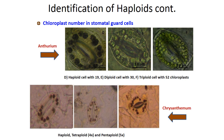The second technique is chloroplast number in stomatal guard cells. As you can see in this picture, haploids have 19 chloroplasts, diploids 30 and triploids 52. The number of chloroplasts increases with the increase in ploidy number. In Anthurium and Chrysanthemum similar things were observed.